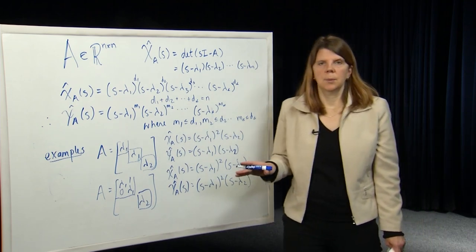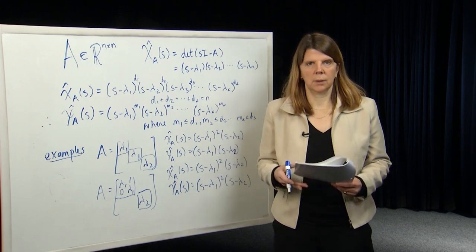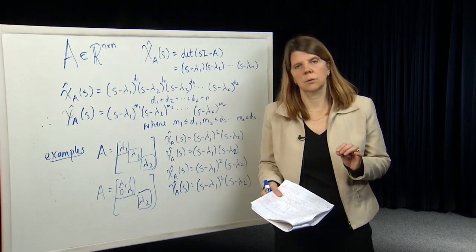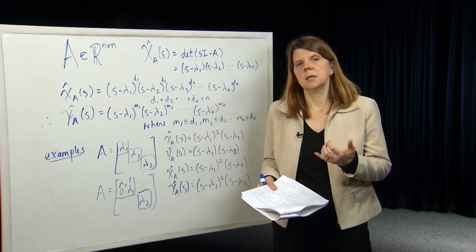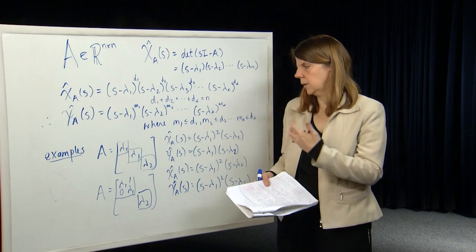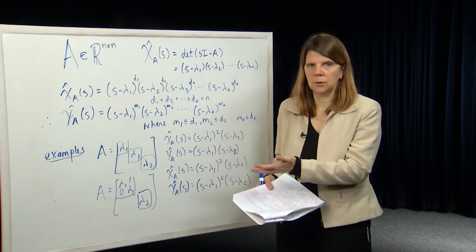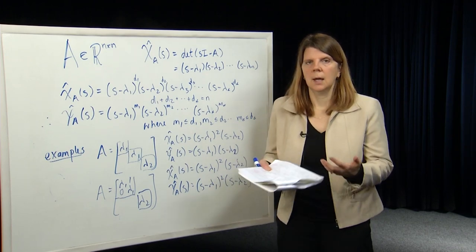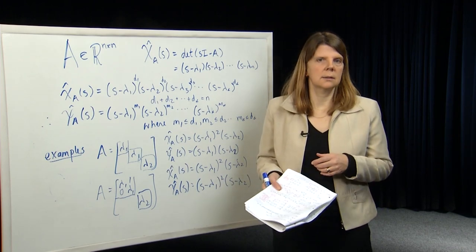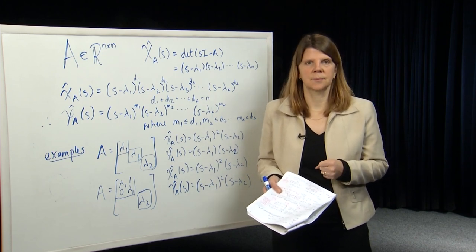So we've defined the minimum polynomial. In the next module, we're going to move on and talk about the Jordan form, based on our knowledge of the minimum polynomial and the concepts of A-invariance and direct sum. Thanks very much.